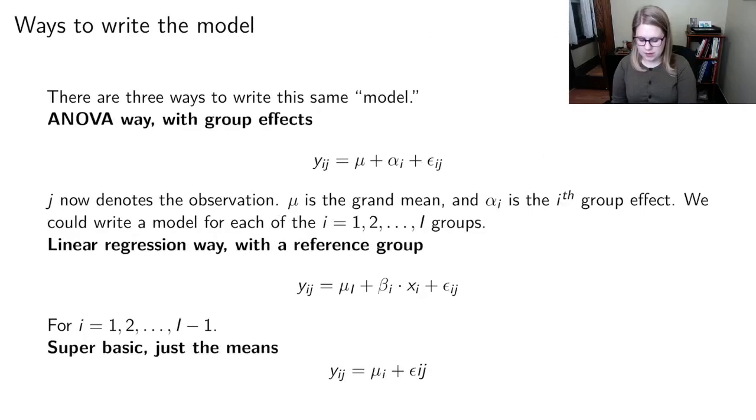So the piece that I haven't talked to you about yet is this kind of algebra which has to do with the three ways that you can write the same model. And again this model is super simple. It's basically just means and in the example that I gave you it's just three different means. But there's three ways to write it. So there's one way which is the ANOVA way which is going to have group effects and then there's the linear regression way which has a reference group and then there's the super basic way which is just the means.